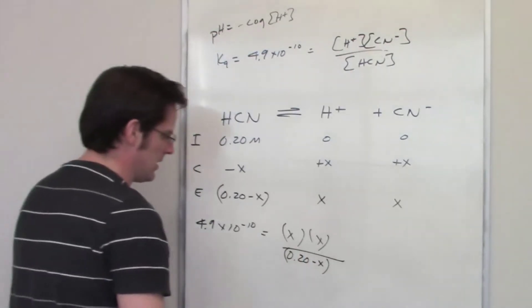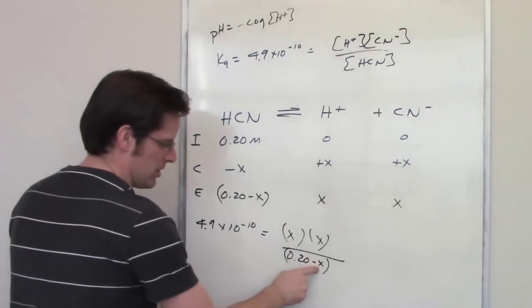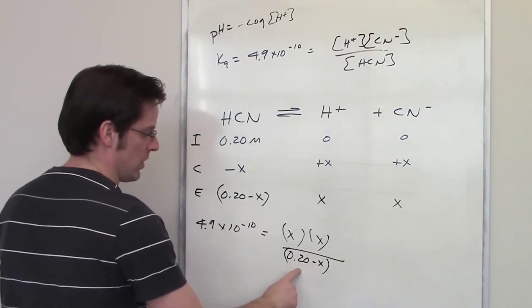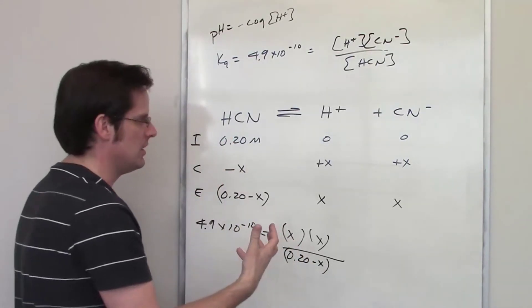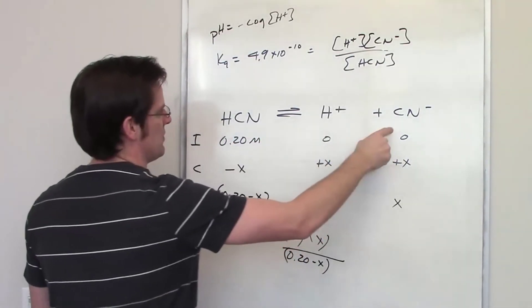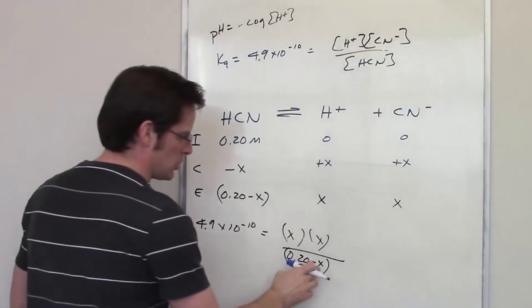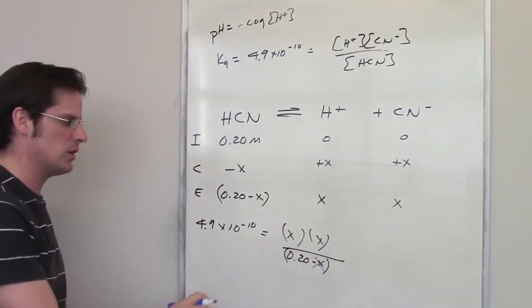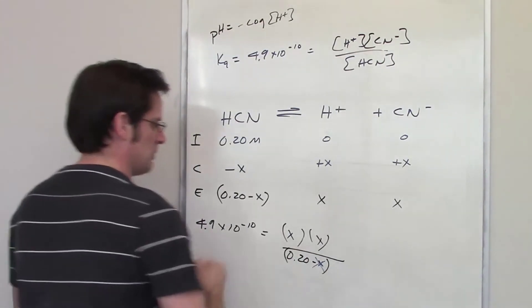Then I solve for X. Now as I pointed out in an earlier video, the denominator value X right here is going to be very very small compared to 0.20, and the reason is because HCN is a weak acid so you don't get huge amounts of these things compared to HCN. Now because this number X here is so small compared to 0.20, you can basically cross it off in the denominator and pretend it's not there. That makes the math much much simpler.